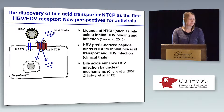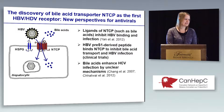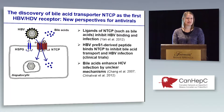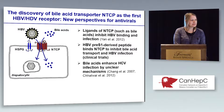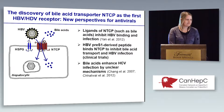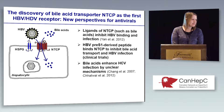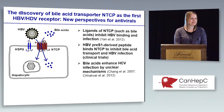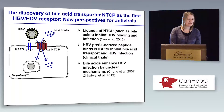I'm actually going to start the story with a different virus, hepatitis B virus, and the discovery of this bile acid transporter, the sodium taurocholate co-transporting polypeptide, which I'll call NTCP, as the first receptor for HBV. It's been shown that ligands of NTCP, such as bile acids themselves, inhibit HBV binding and infection.